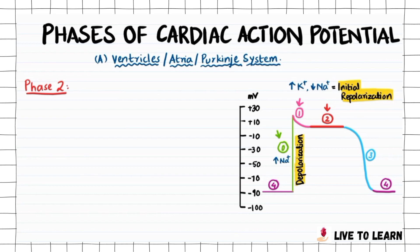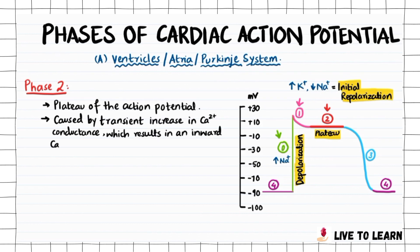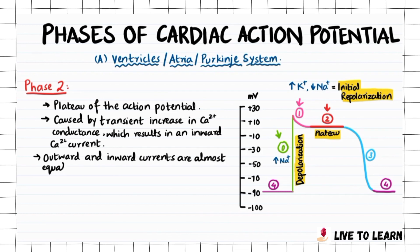Phase 2, the part shown in red on the graph, represents the plateau of the action potential. It is caused by a transient increase in calcium conductance, which results in an inward calcium current. During phase 2, outward and inward currents are almost equal so the membrane potential is stable.